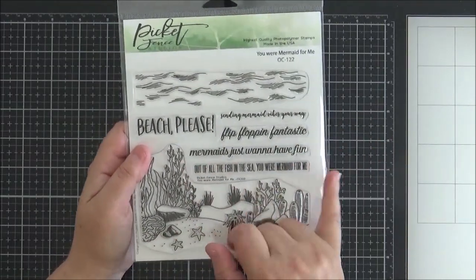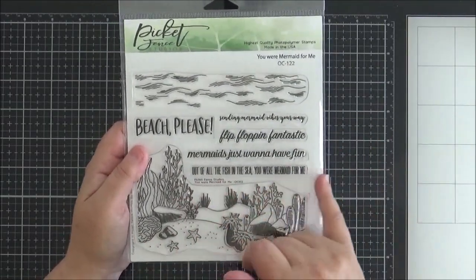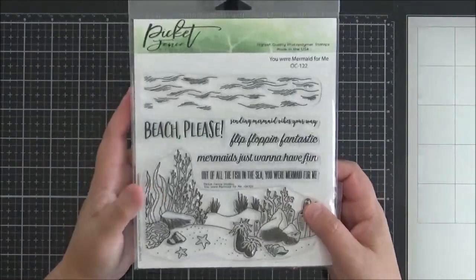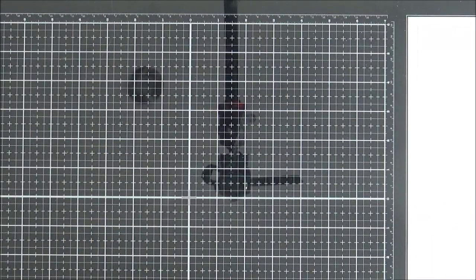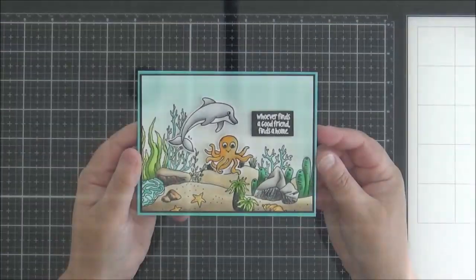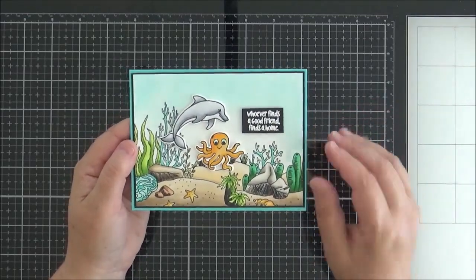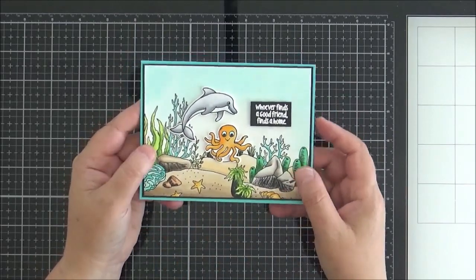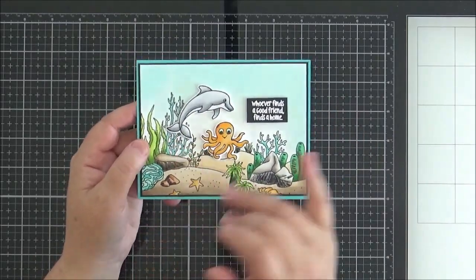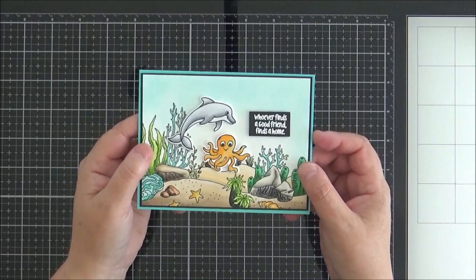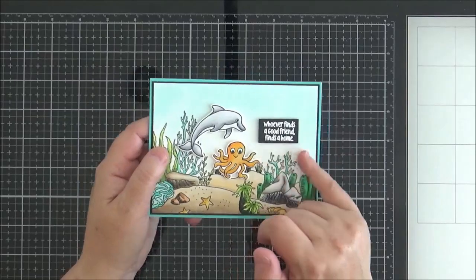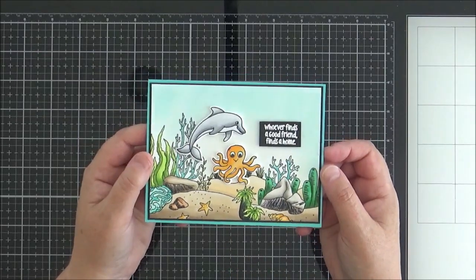Beach, please. Mermaids just want to have fun. Out of all the fish in the sea, you were mermaid for me. So a really lovely set if you just want to spend a little bit of time sitting down and coloring, which is what I did for my card. So this is the card that I created. I took that beautiful ocean, bottom of the ocean scene, and I took the octopus and the dolphin from more of a fishy lot. And I've added those on the top.